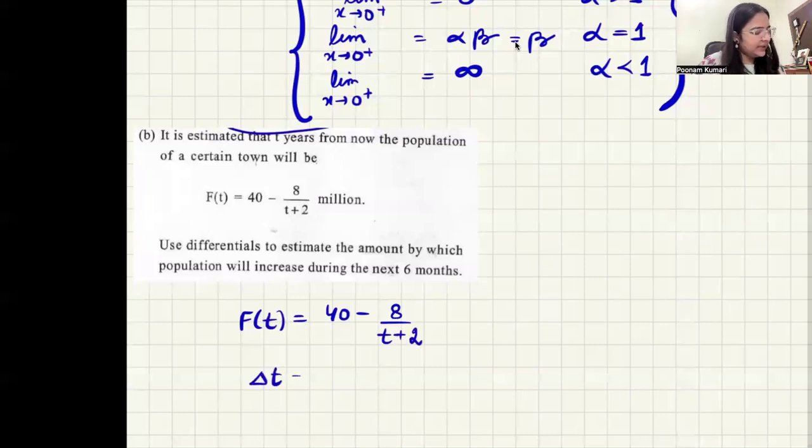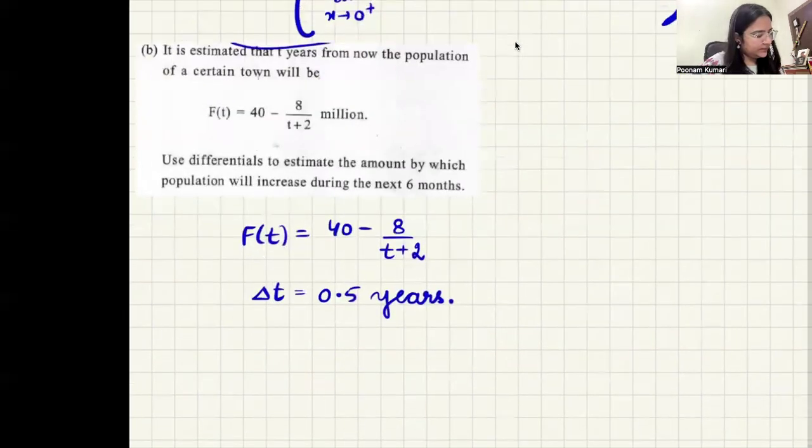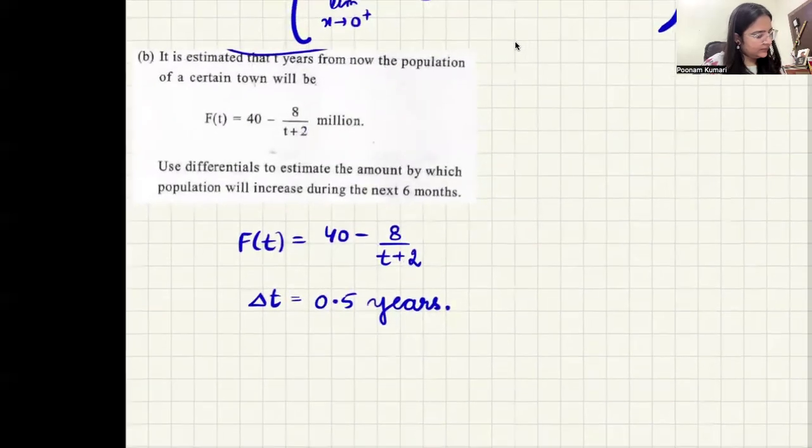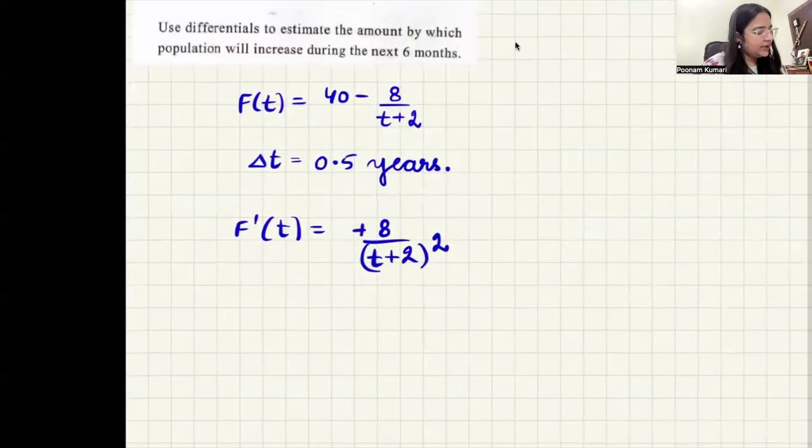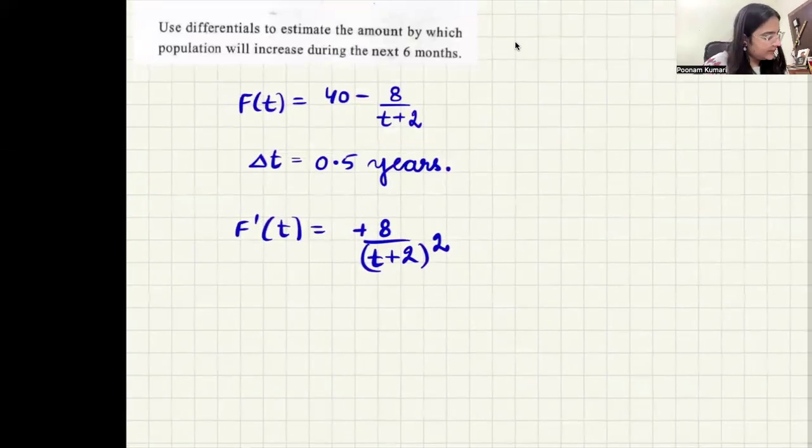So F(t) is given to us like this: 40 - 8 divided by (t+2). The change in t given is six months. Since t is in years, six months will be like 0.5 years. If we use differentials, F'(t) will be -8(t+2)^(-1), so minus one will come in front and then (t+2) squared. This is the term that we will have. According to differentials, change in F is approximately equal to F'(t) times change in t. This is the rule of differentials that we have here.